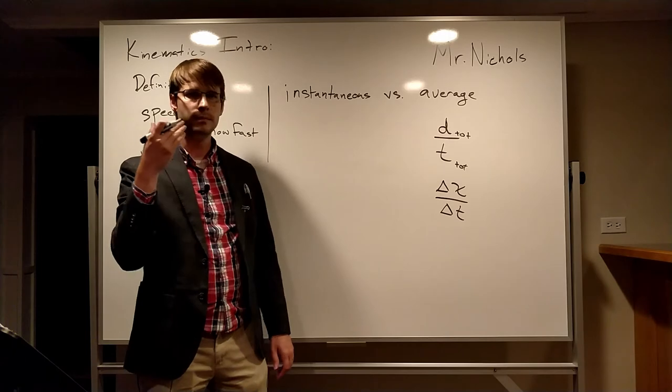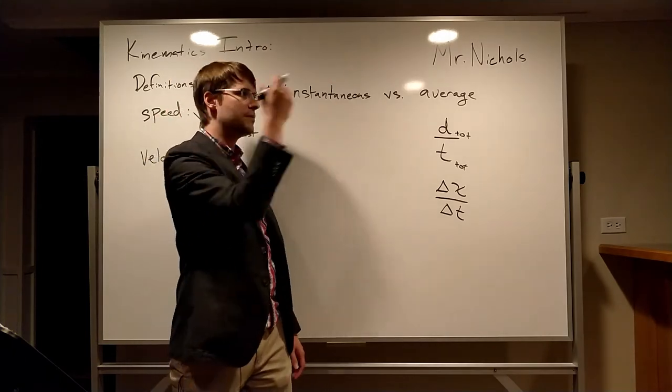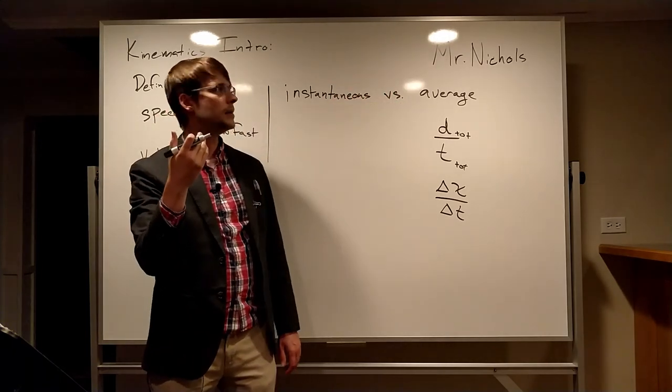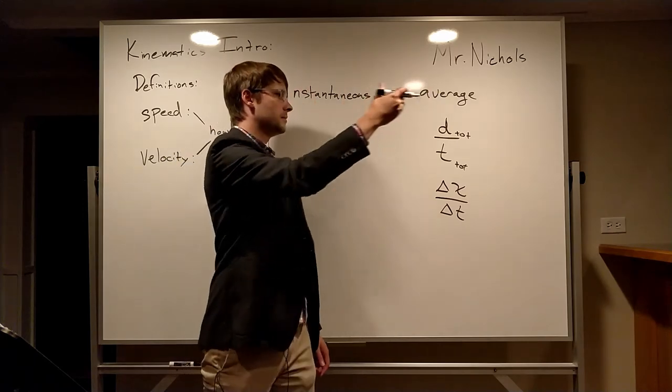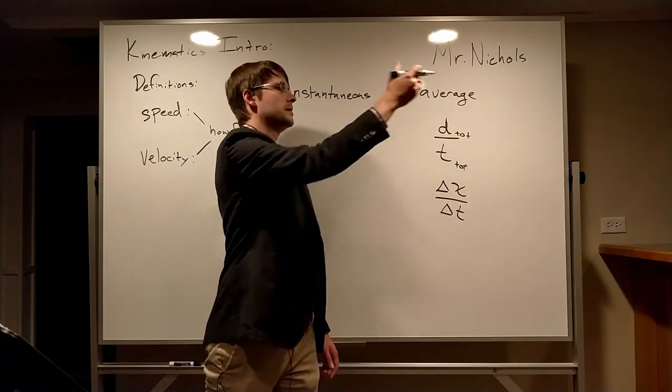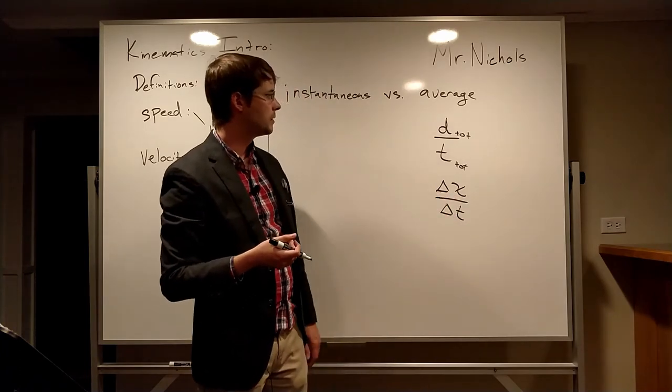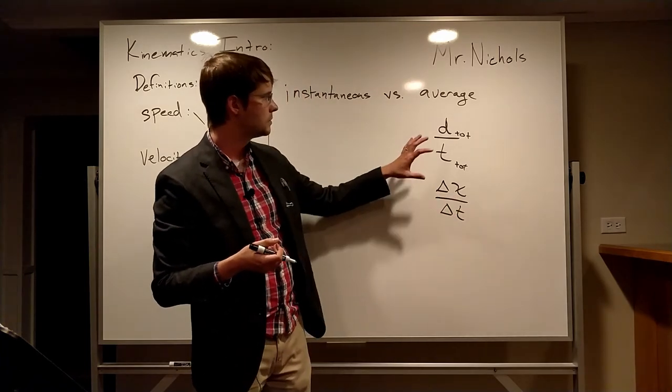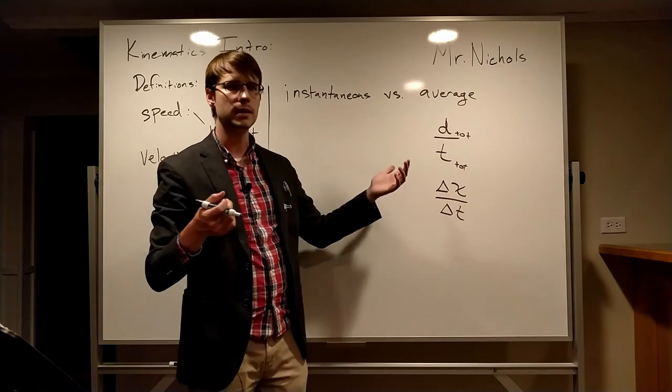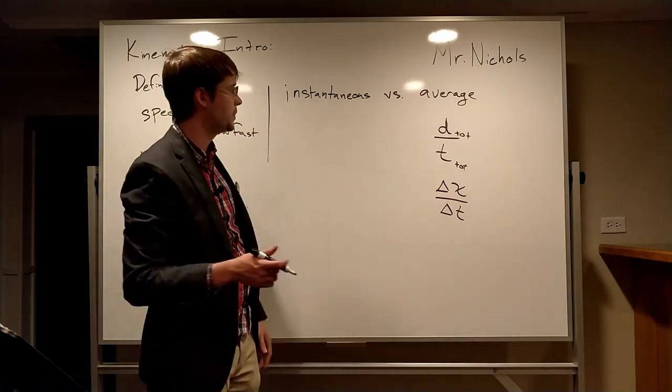So if you think about swimming in a pool down and back, 25 meters down, 25 meters back, that trip would be 50 meters round trip and it would be zero meters of displacement because you wind up back where you started. And so we can look at something like this to sort of show how average speed and average velocity aren't always the same thing.